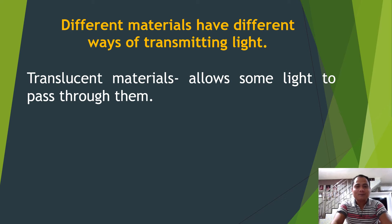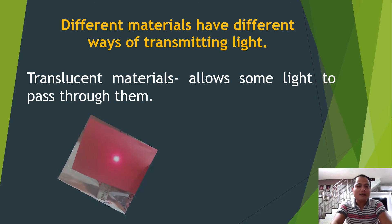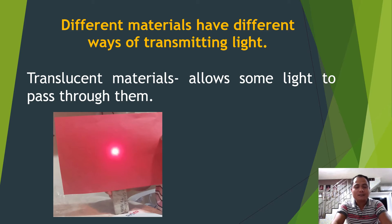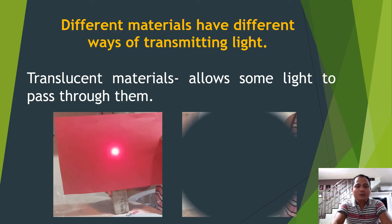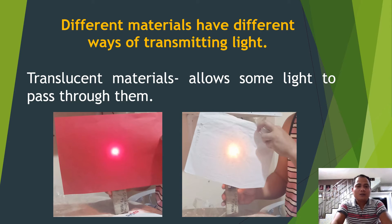When we say translucent materials, they allow some light to pass through them. An example is colored paper — you can see some light passing through. Also, bond paper is translucent. We use translucent materials like curtains at home to block some of the light coming from the sun.